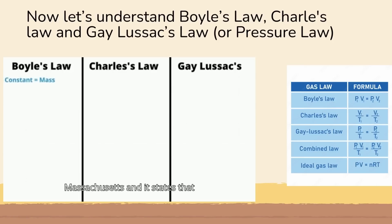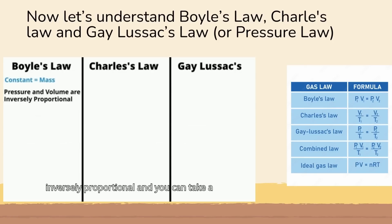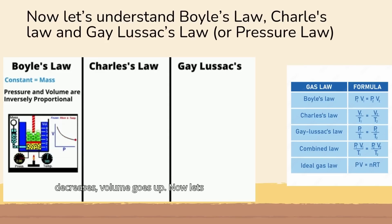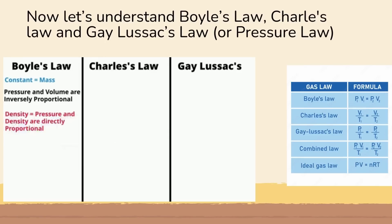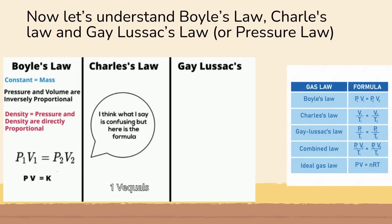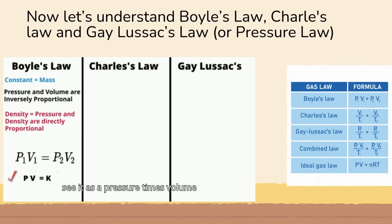For Boyle's law, the constant is mass, and it states that pressure and volume are inversely proportional. You can see in this graph that as pressure increases, volume goes down, and as pressure decreases, volume goes up. Pressure and density are directly proportional — so as pressure goes up, so does density. The formula is P1V1 = P2V2, where P is pressure and V is volume, or pressure times volume equals K, a proportionality constant.